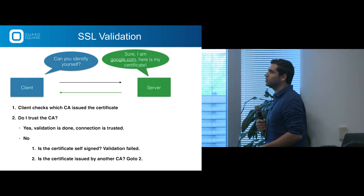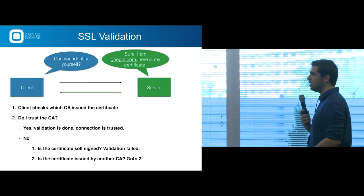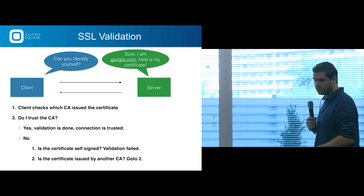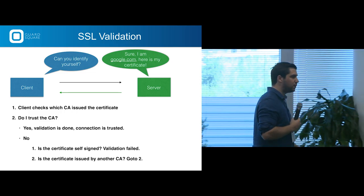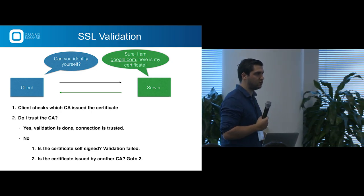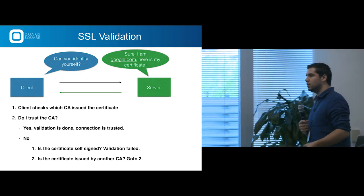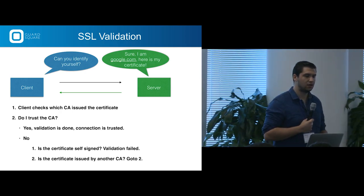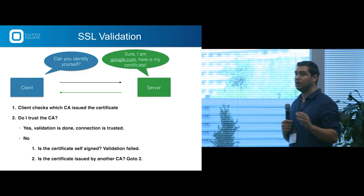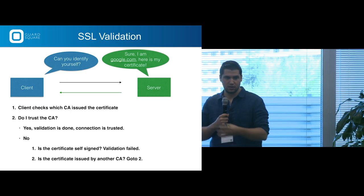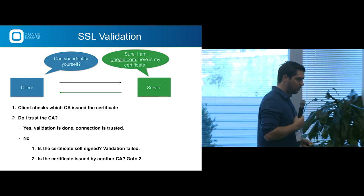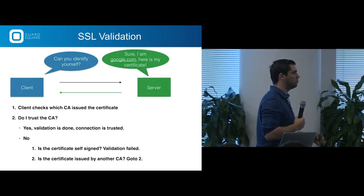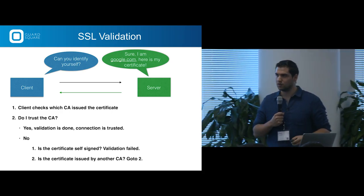How does this protocol work? Your application says to a server: can you identify yourself? The server says: I'm google.com, here's my certificate. The client checks which CA issued the certificate and whether it trusts that CA. If yes, validation is done, the connection is trusted, and you start negotiating a session key and encrypting traffic. If the CA is not trusted, you check whether the certificate is self-signed — validation fails and you break down the connection. If the certificate is issued by another CA, you go back up the chain and check again.